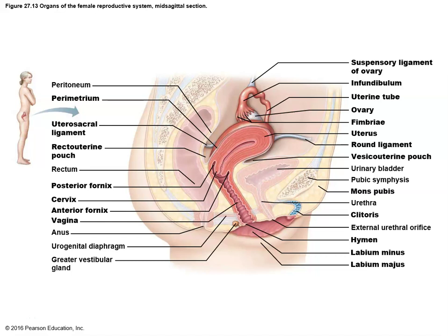Welcome to the second half of our human reproduction discussion. This will cover the female reproductive system. The female reproductive system also has a fair number of pieces and parts to it, and in many ways is a little bit more complex than the male system, because there are a lot more very specific functionalities going on here.